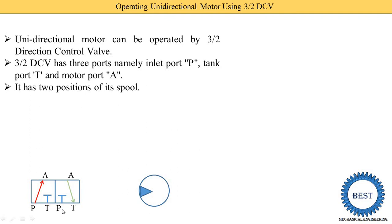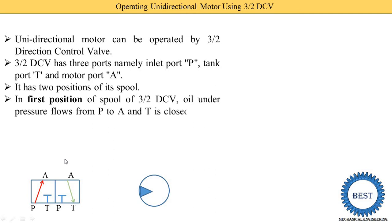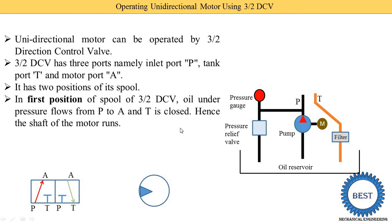It now has two positions — that is clear. In the first position of the spool of the 3 by 2 DCV, oil under pressure flows from P to A and the T port is closed. Hence the shaft of the motor runs. Now we draw the complete diagram. For every type of hydraulic circuit we require to draw this part. If you want to completely understand the general layout with animations, I provide the link in a card at the top right of your screen.